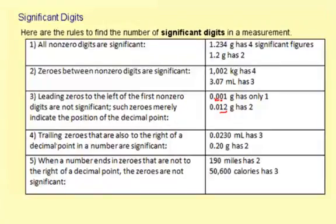Rule number four: trailing zeros, and those are zeros that are after a decimal, like this or this. Trailing zeros that are also to the right of a decimal point in a number are significant. What this says is you have a more precise reading. So 0.0230 is more precise than 0.023, which is why this zero is significant. So 0.023 has three total significant digits or significant figures, and 0.20 has two significant figures.